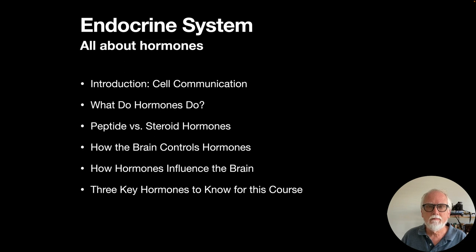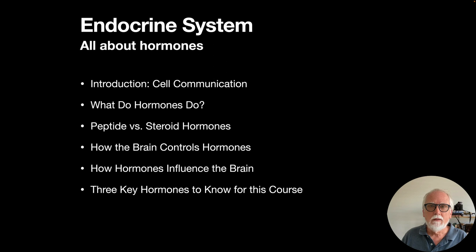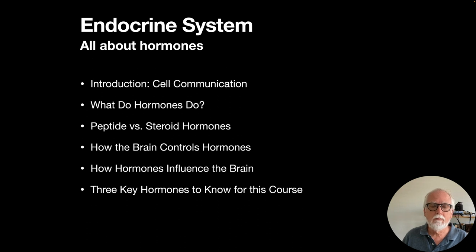In this lecture I'm going to talk about: first, an introduction to how cells communicate with one another to give us some context about where the endocrine system does its job; what hormones do; the distinction between peptide and steroid hormones; how the brain controls hormone production; how hormones can influence the brain; and finally, three key hormones you should know for this course.